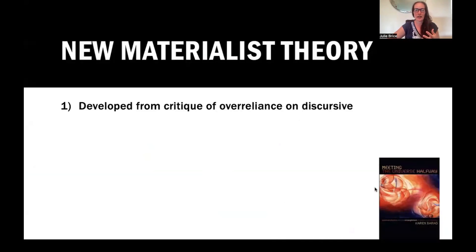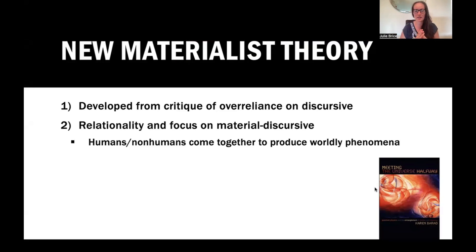New materialist theory really began 20, 30 years ago based upon this critique of this over-reliance on the discursive, this idea that particularly within the social sciences, we are so much emphasizing language and human experience and discourses. What that did is it tended to ignore the materiality of our existence. So with new materialism, there's a really big focus on taking that discourse but seeing how materials around us, particularly non-human materials, interact. Humans and non-humans come together to produce worldly phenomena. We need to look at how humans, non-humans, organic, non-organic all interact with each other.